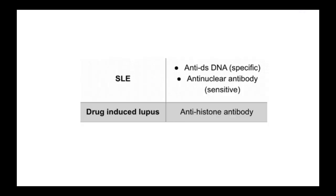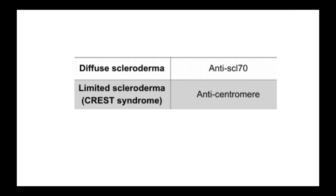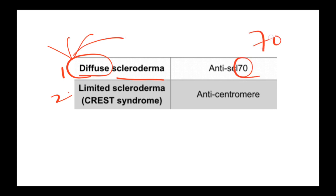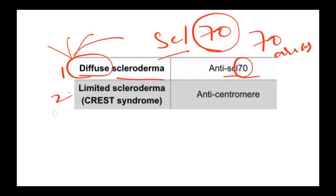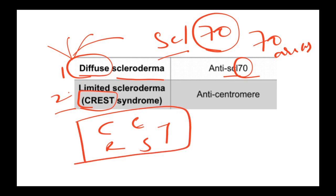Scleroderma has two types. In diffuse scleroderma, the disease is present in many different areas of the body — remember it as SCL-70, where SCL is for scleroderma and 70 refers to the many areas affected. The second type is limited scleroderma, also called CREST syndrome. You can remember CREST with 'C' and anti-centromere with another 'C' — so anti-centromere antibodies are seen in CREST syndrome.